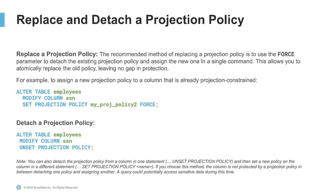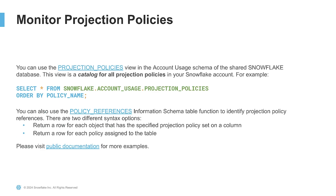You can replace the projection policy applied to a column by running another alter table statement and forcing that new projection policy on the column of interest. To remove a projection policy, simply run an alter table statement with unset projection policy against the projection-constrained column. You can monitor projection policies through the projection policies view in the account usage schema of your Snowflake database. You can also look at the policy references table in the information schema of a database to identify projection policy references. You can return two different syntaxes: a row for each object that has a projection policy on it, and a row for each policy assigned to the table.